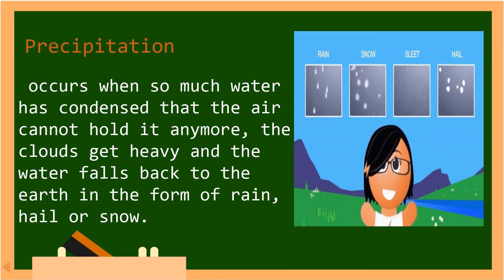Precipitation occurs when so much water has condensed that the air cannot hold it anymore. The clouds get heavy and the water falls back to the earth in the form of rain, hail, or snow.